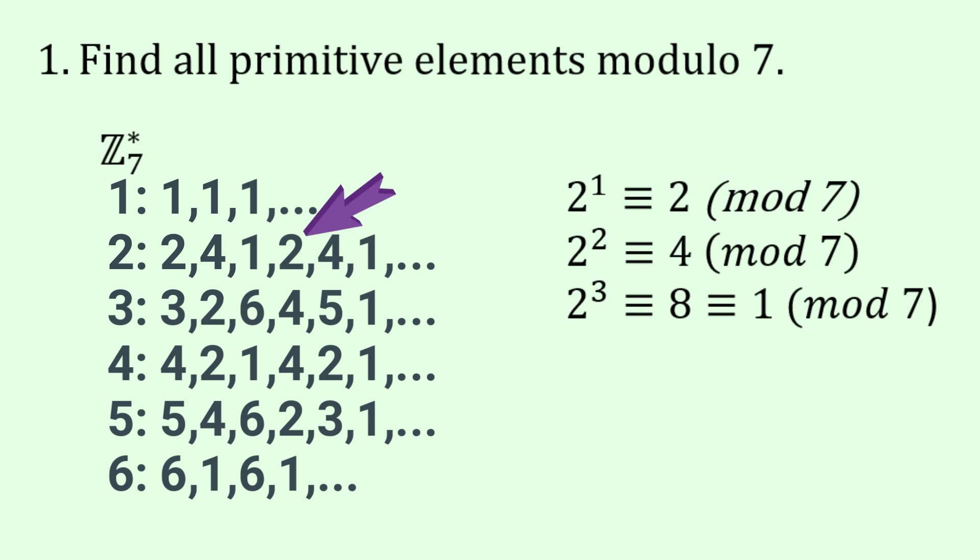Now once I get to a 1 the whole pattern repeats because the next power is just 1 times 2 is 2. So 2 to the power 4 is 2 modulo 7.